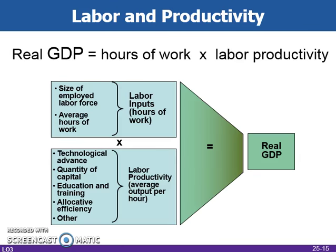Society can increase its real output and income in one of two ways: one, by increasing its inputs of resources, and two, by raising the productivity of those inputs. By focusing on the labor input, we can build a framework for discussing the role of supply factors in growth. A nation's economic growth from one year to the next depends on its increase in labor inputs and its increase in labor productivity.